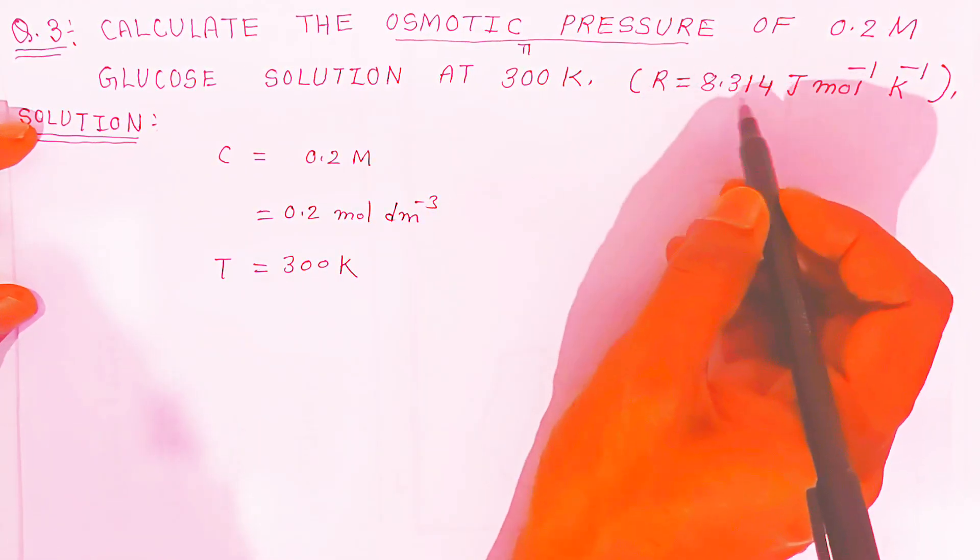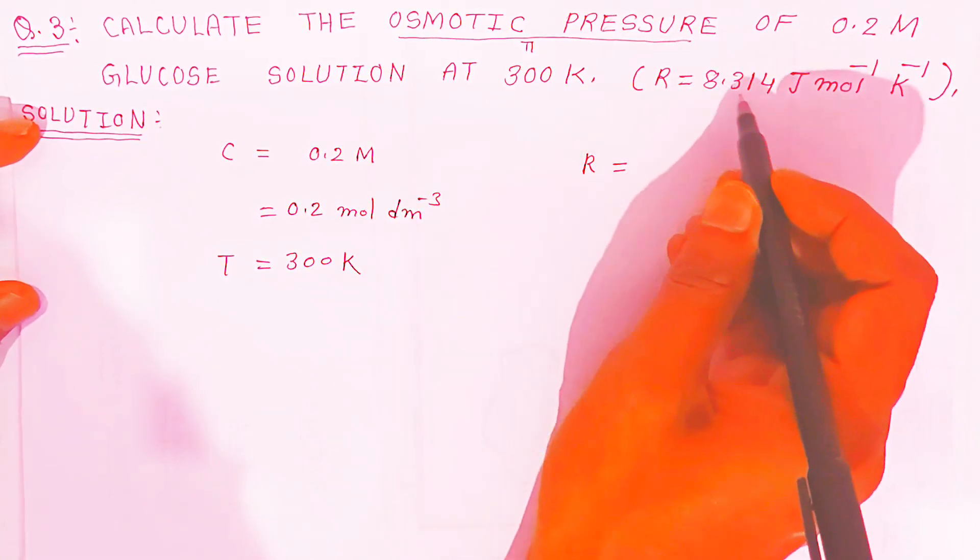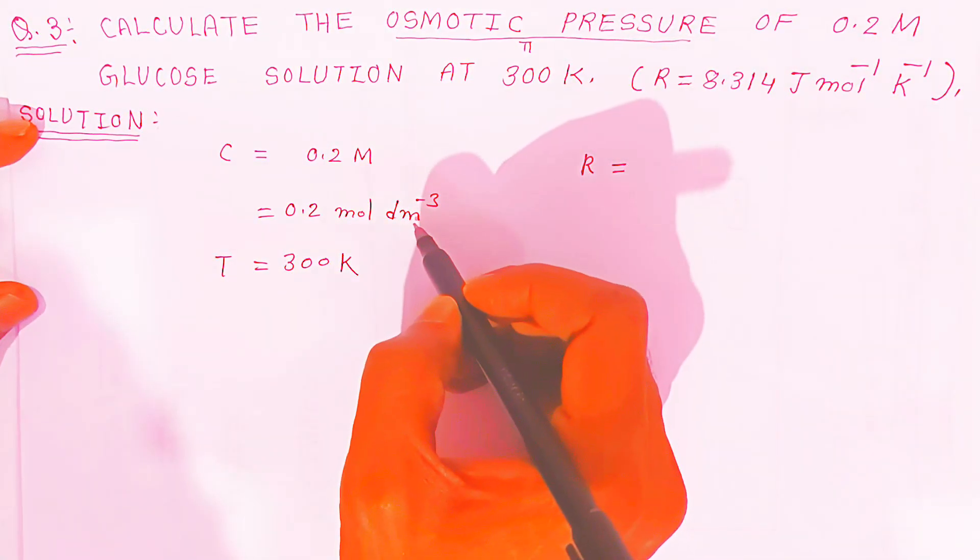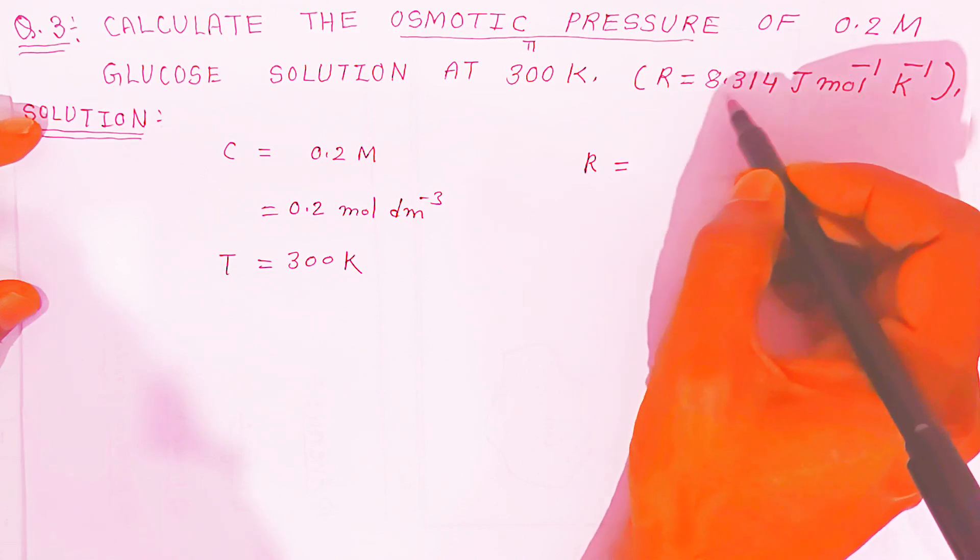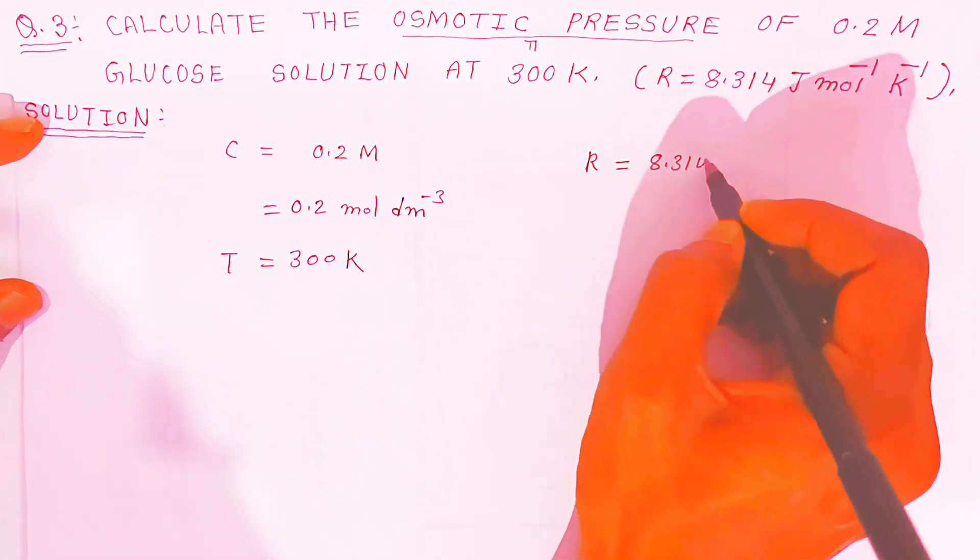Now the universal gas constant is given in Joule per kelvin. If you want to convert into liter atmosphere per dm³, you have to convert Joule into liter atmosphere. So you have to divide this by 10⁻³, so 8.314 if you divide by 1000, that is you have to multiply by 10⁻³.